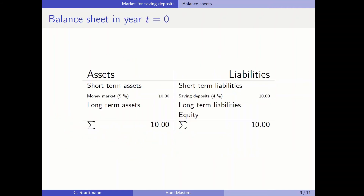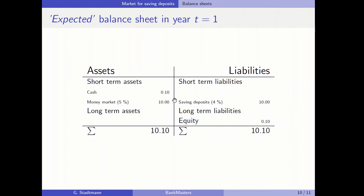The balance sheet at the beginning of the year shows short-term liabilities — saving deposits at 4 percent with a size of 10 — on the liability side. On the asset side we sell those saving deposits at the money market at 5 percent, also with 10 units. At year end, the money market generates 50 cents in revenues, saving deposits cost 40 cents, giving a profit of 10 cents. The 10 cents appear in cash and equity increases by 10 cents.